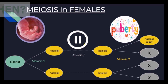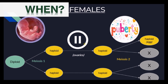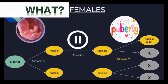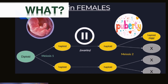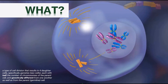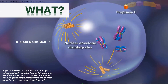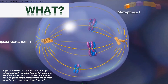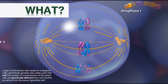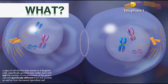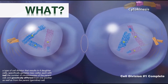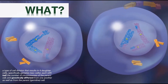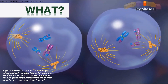Now let's clarify the what of meiosis. Meiosis is the word we use to describe the process of taking a diploid cell and having that diploid cell go through two rounds of cellular division to produce a haploid cell that is genetically different from the original parent cell.